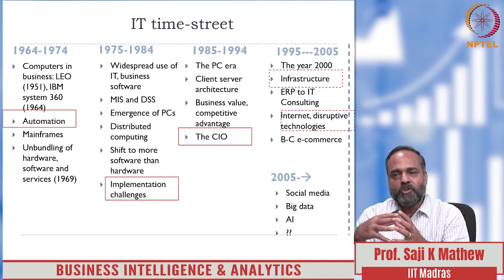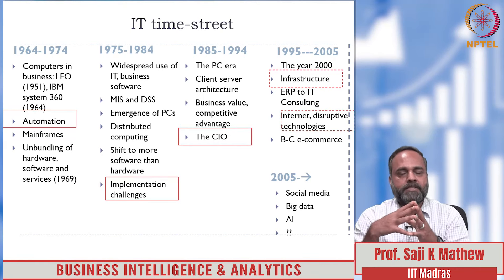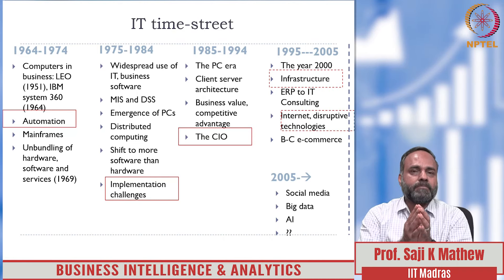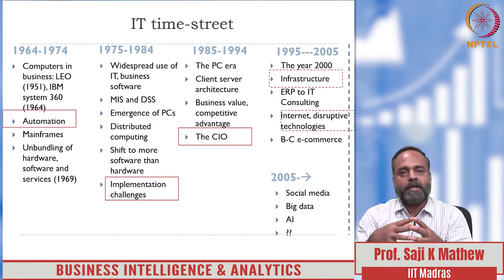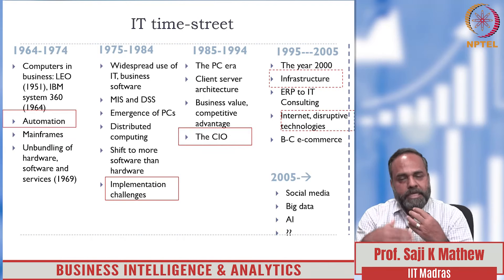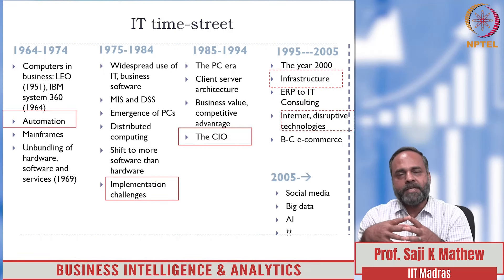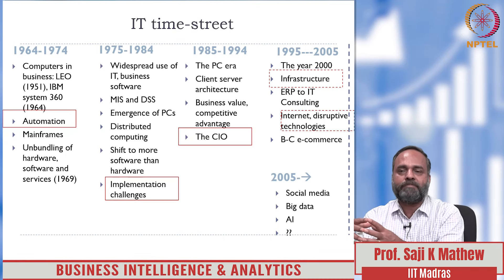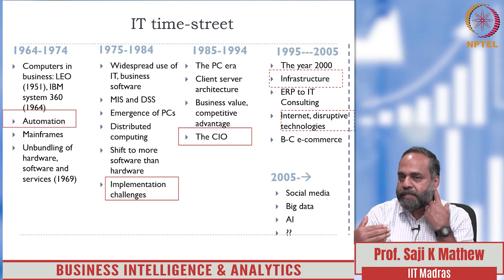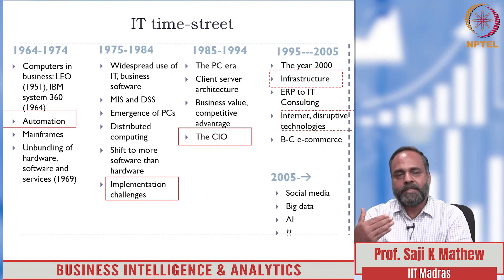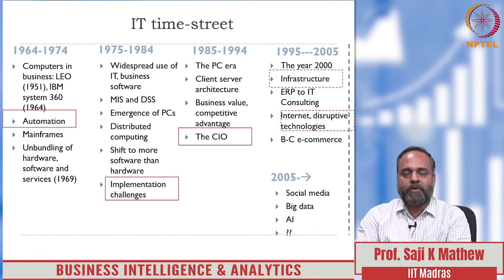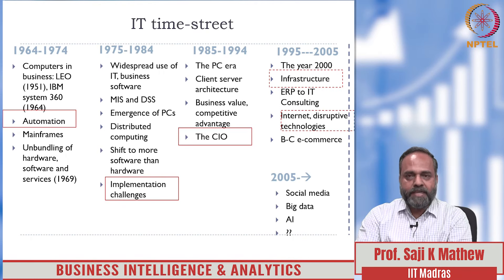This IT history timeline provides a picture of the growth of data use for insights in business, from the early era of the 1960s to the current social media era from 2005 onwards, where the scope of data analysis has moved from MIS/DSS to business intelligence, analytics, big data, and data science today. With artificial intelligence and machine learning, we are creating algorithms that learn and become more intelligent with more data over time — that is artificial intelligence derived from training data. However, this course is scoped around business intelligence and analytics.